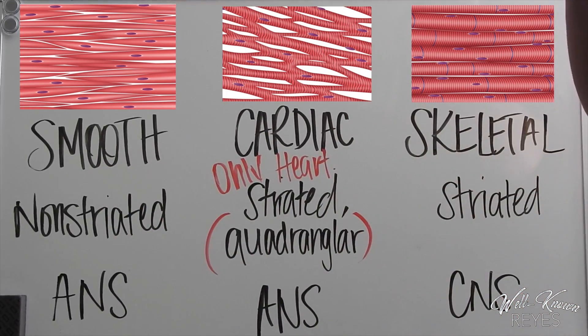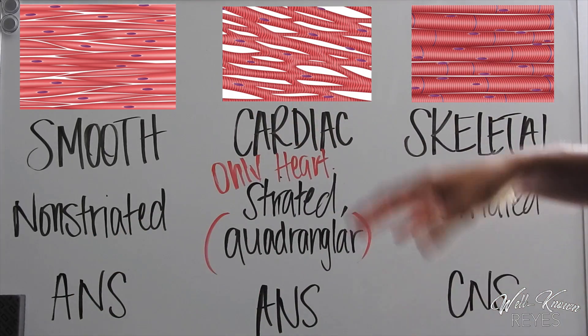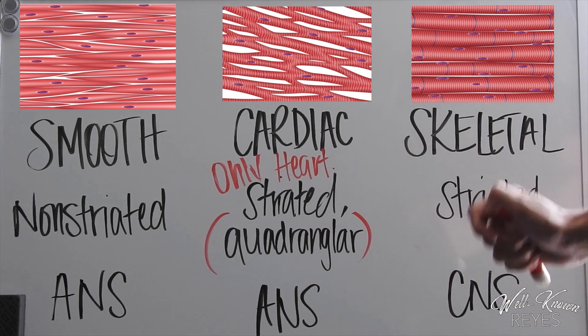This is controlled by conscious will through our central nervous system. I tell my muscles what to do by transmitting signals from my brain and spinal cord through my peripheral nervous system, and that's what is responsible for making movements.